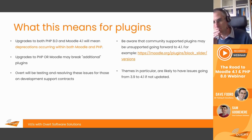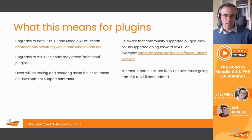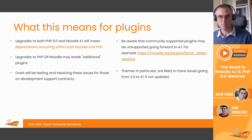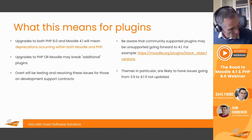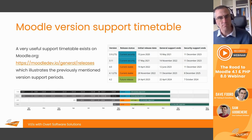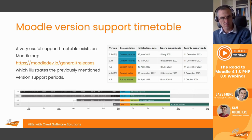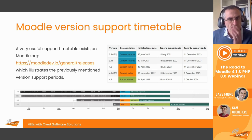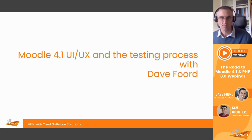For example, the block side plugin which a few of our customers use doesn't appear to currently be planned for upgrade to 4.1 — so that's definitely worth monitoring. It would also be a good idea to consider what plugins you can get rid of and what isn't used any longer as you go through the upgrade process. We can refer to the Moodle version support timetable at moodle.dev/general-releases. I'll now hand over to Dave Ford to discuss the UI/UX aspects and the general testing process.